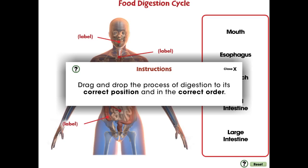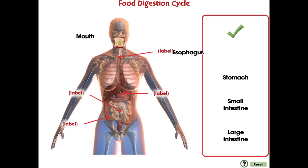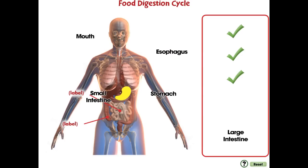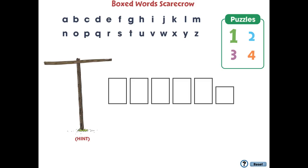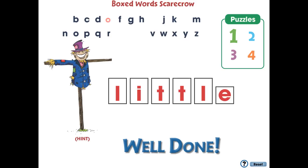In all of our IWB titles, we include engaging apps to support the comprehension of the content in the reading passage. In all of our apps, detailed instructions are provided. For this activity, found in our Human Body series, students will drag the parts of the human digestive system to watch the food digestive cycle. For this activity, found in our Sight and Picture Words series, students will solve the word puzzle before completing the scarecrow.